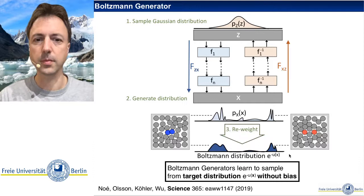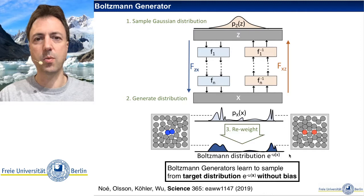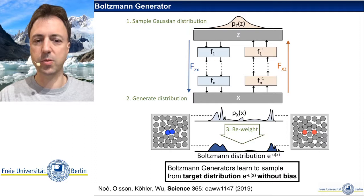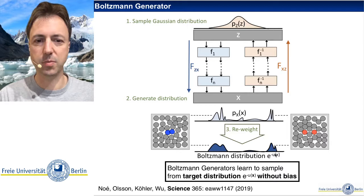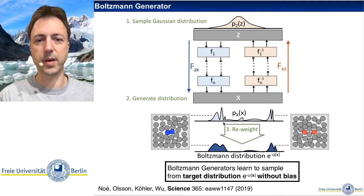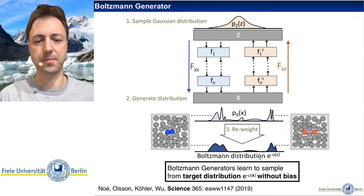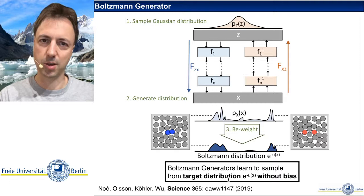There is an extension to normalizing flows called Boltzmann generators, which train a flow to generate a probability distribution p of x similar to a reference distribution given by some energy-based model, such as the Boltzmann distribution of a given energy. Then we use a second re-weighting step using importance sampling or Markov chain Monte Carlo to re-weight the output distribution p of x to the exact target distribution. In this way we can draw samples from the target distribution without asymptotic bias, which is very important in physics applications.